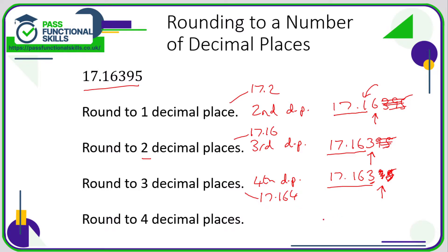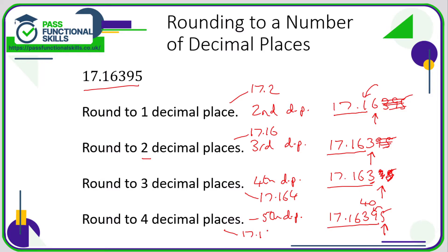To four decimal places — I'd be very surprised if you're ever asked to round to four decimal places — but if you can round to one decimal place, you can round to any number of decimal places; it's the same technique. With 17.16395, rounding to four decimal places, we look at the fifth decimal place, which is the 5. Because it's a five, we always round up. This is a bit tricky because the nine rounds up, but we look at the 3 and the 9 together and that rounds up to 4 and 0.